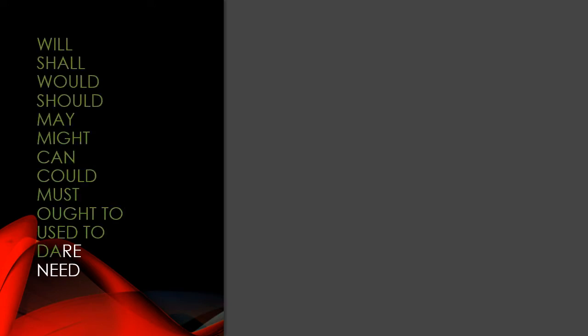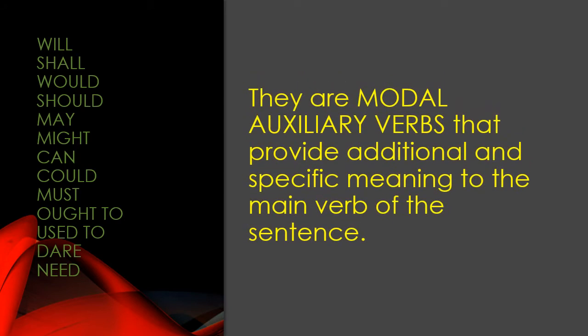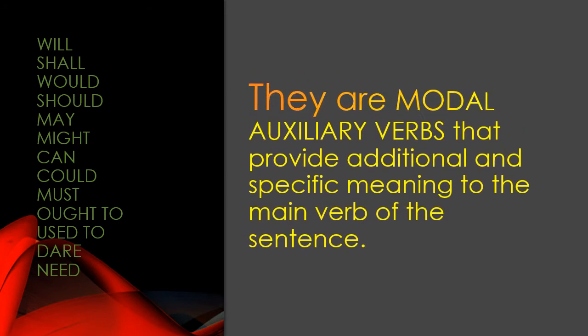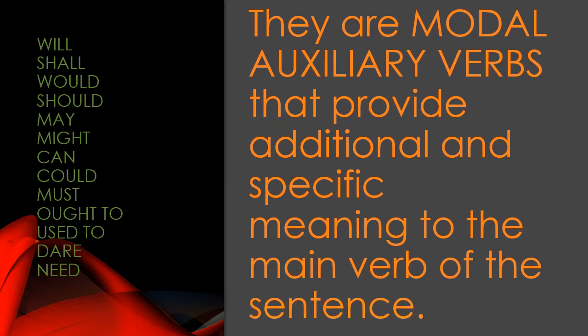Will, shall, would, should, may, might, can, could, must, ought to, used to, dare, and need — they are modal auxiliary verbs that provide additional and specific meaning to the main verb of the sentence. These are specific verbs which help us to make our sense or mood clear in the sentence.